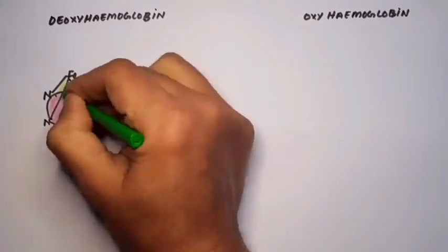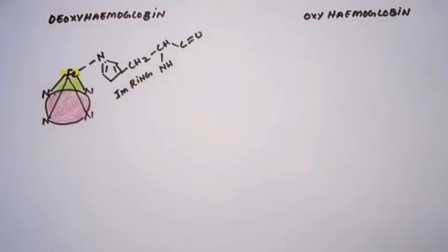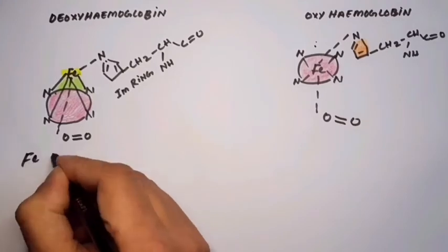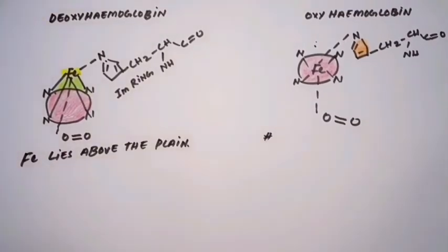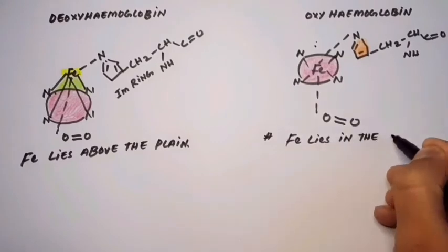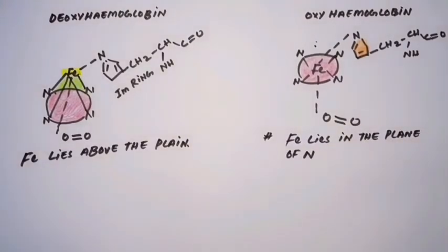Here we are going to draw the structure of both oxy and deoxy forms. In the deoxy form, the central metal atom iron lies above the plane. In the oxy form, the iron is at the center in the plane of nitrogen.